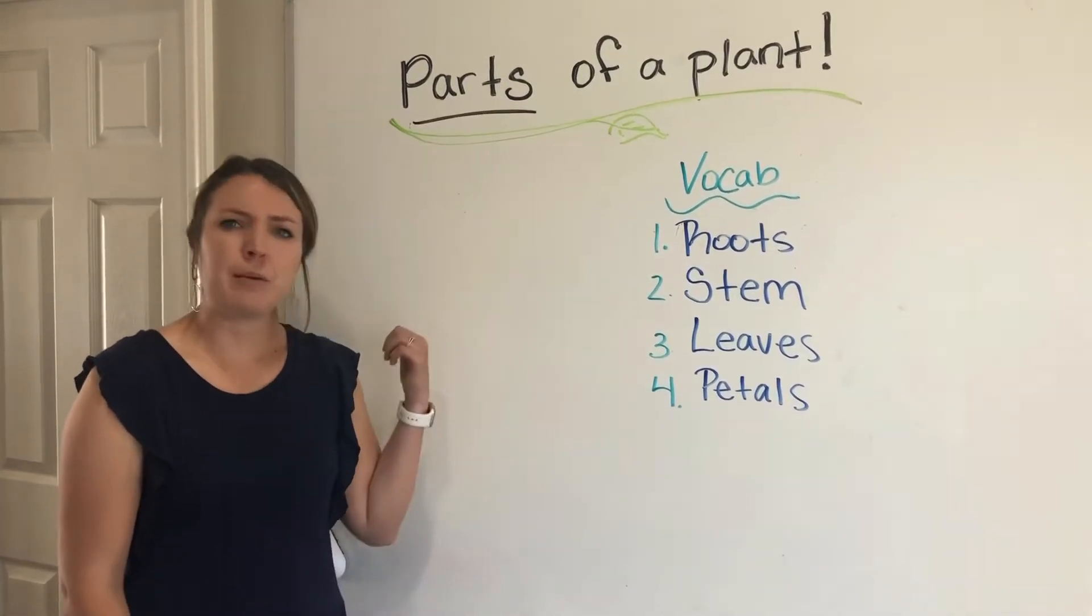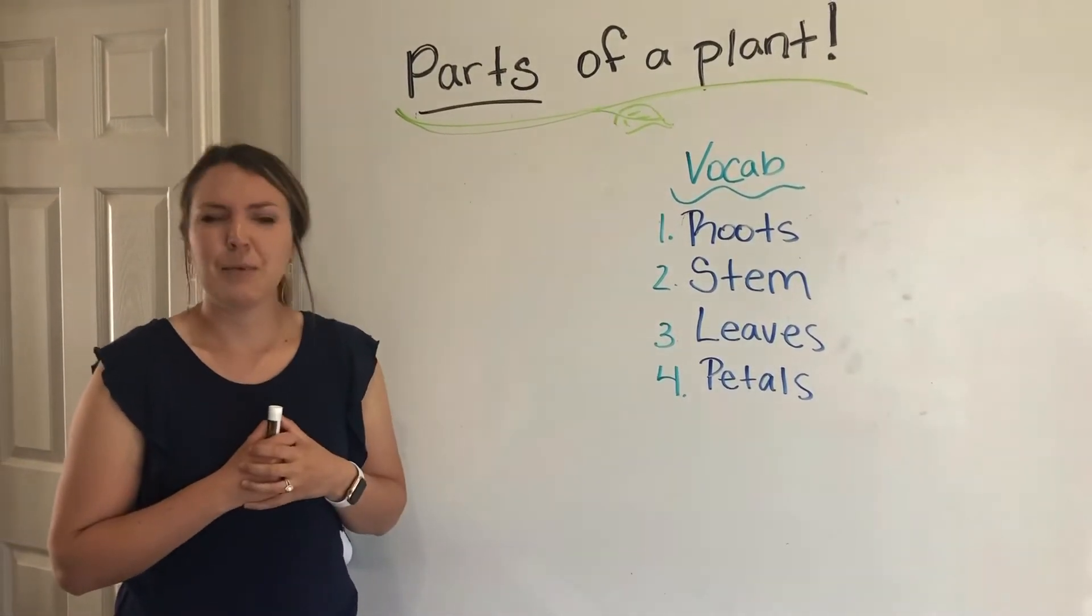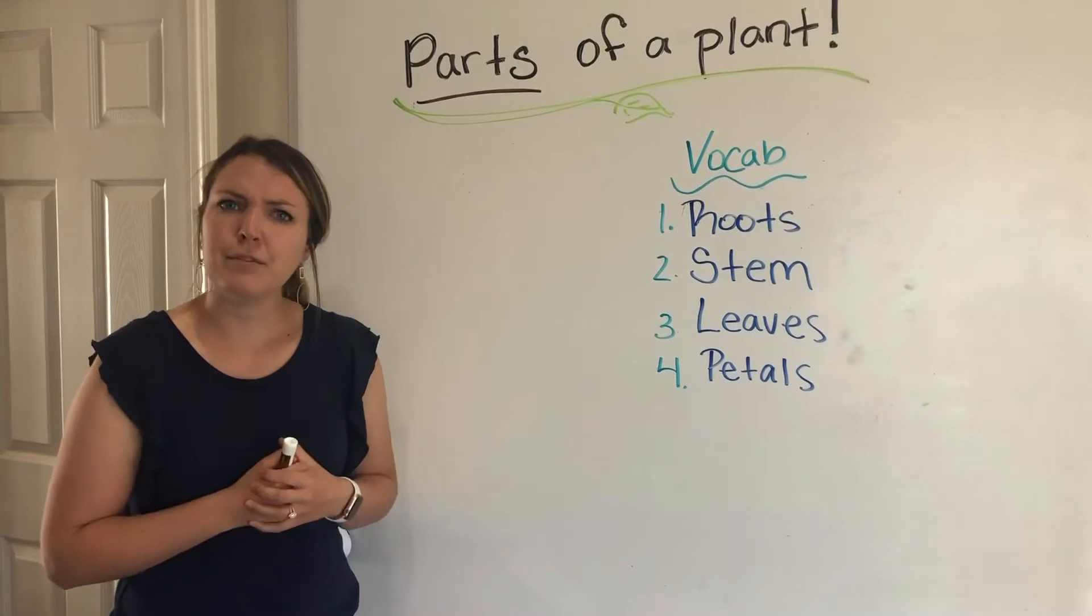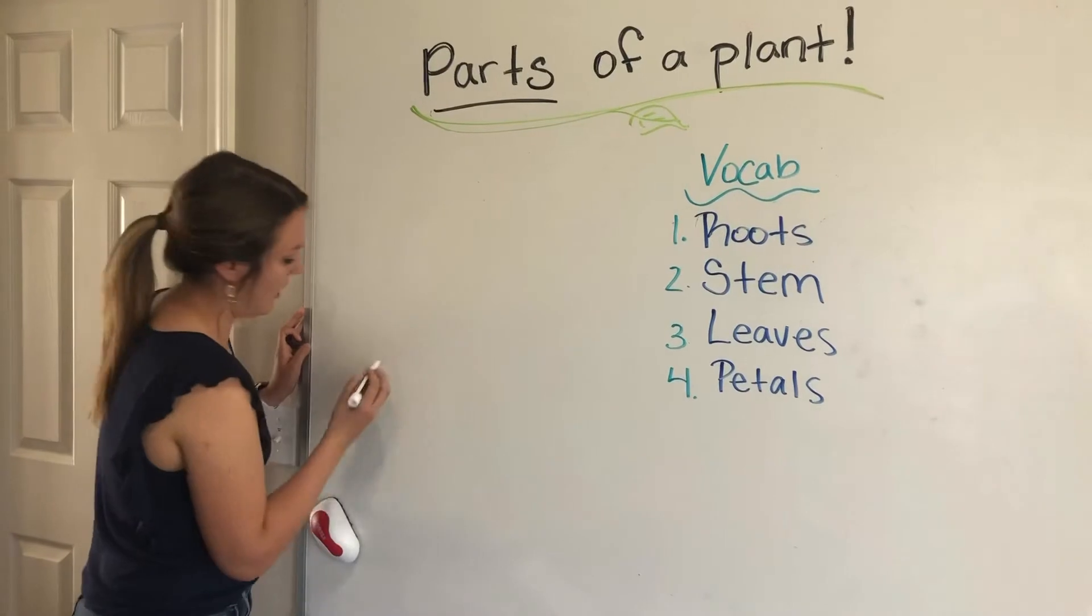Some of you might've noticed that they were growing in something, whether they were in a pot or if they were outside. What do you think that was? What were they growing out of? Soil or the ground. So we'll start by drawing the soil and the ground.